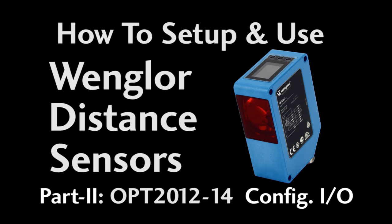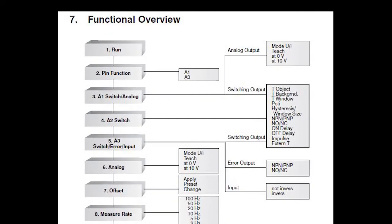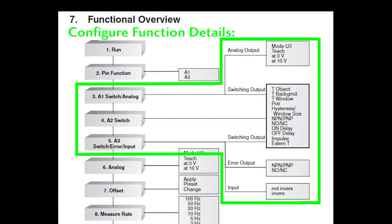In this video we'll walk through the various I.O. pin configuration options shown in this functional overview chart from the user's manual. This looks kind of complicated but it's really not that bad once you understand what's going on. In this menu option you tell pins A1 and A3 what they'll be doing. Then down here you refine that configuration for the function that you chose.